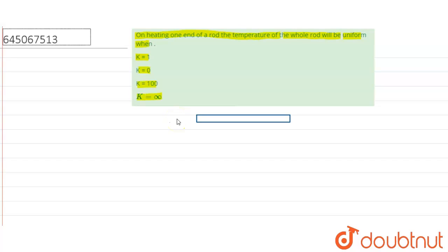Say one end is at temperature θ₁, another is θ₂, where θ₁ is greater than θ₂. This length is L and thermal conductivity is k.